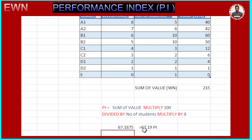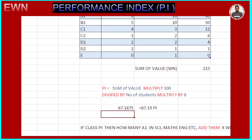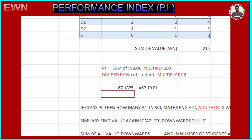The result is 67.1875. Rounding it off — since the digit after the second decimal is above 5 we round up — it becomes 67.19. So the PI for this subject is 67.19.